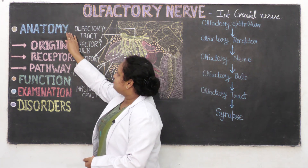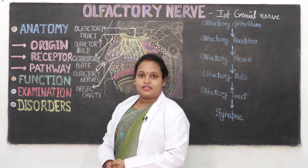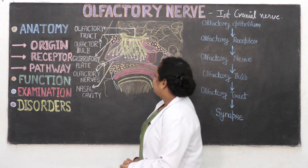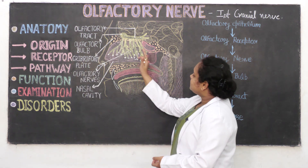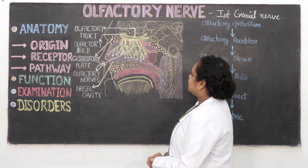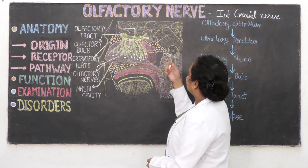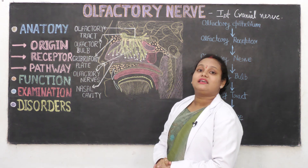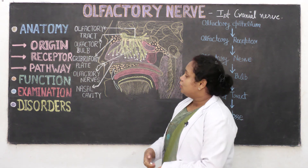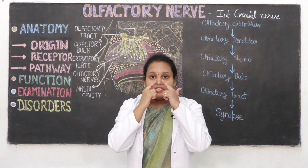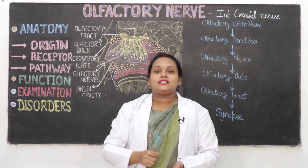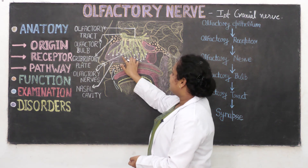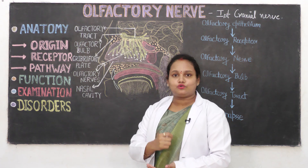Now we will talk about anatomy. First of all, we will see its origin. As you can see in this diagram, the olfactory nerve originates from the olfactory epithelium. This is your nose — the epithelium present in the nose is where it originates, where it starts.